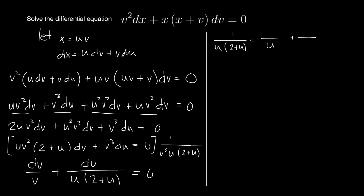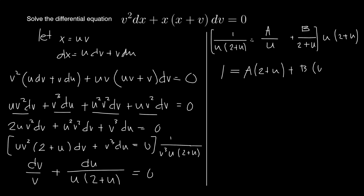We decompose 1/(u(2 + u)) into partial fractions: one with denominator u and the other with denominator (2 + u). We don't know the numerators so we call them A and B respectively. Multiplying through by u(2 + u) gives: 1 = A(2 + u) + Bu.